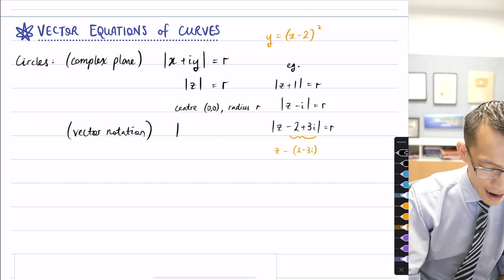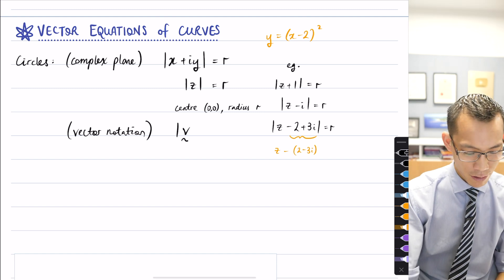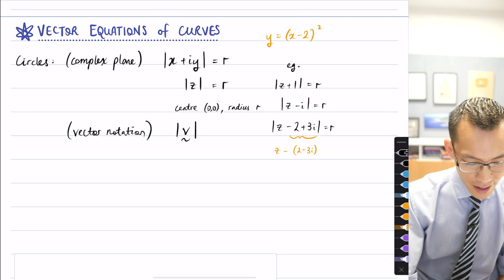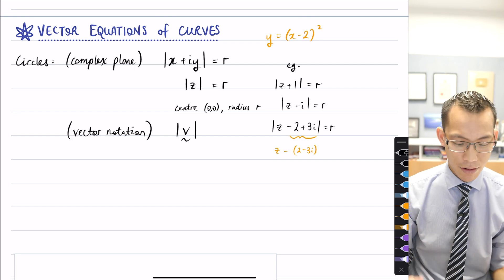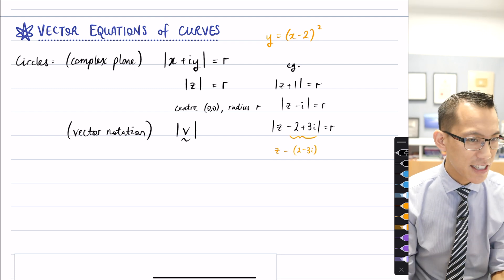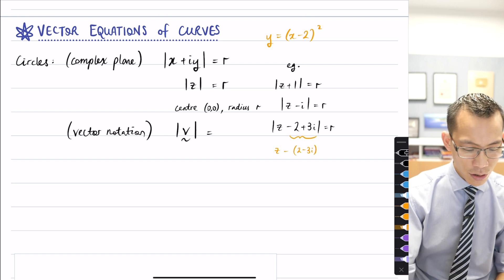So we tend to write the vector just as, well, crazy, right? V for vector. So what we've got is the modulus, or in this case, we would now say the magnitude of vector V is equal to...